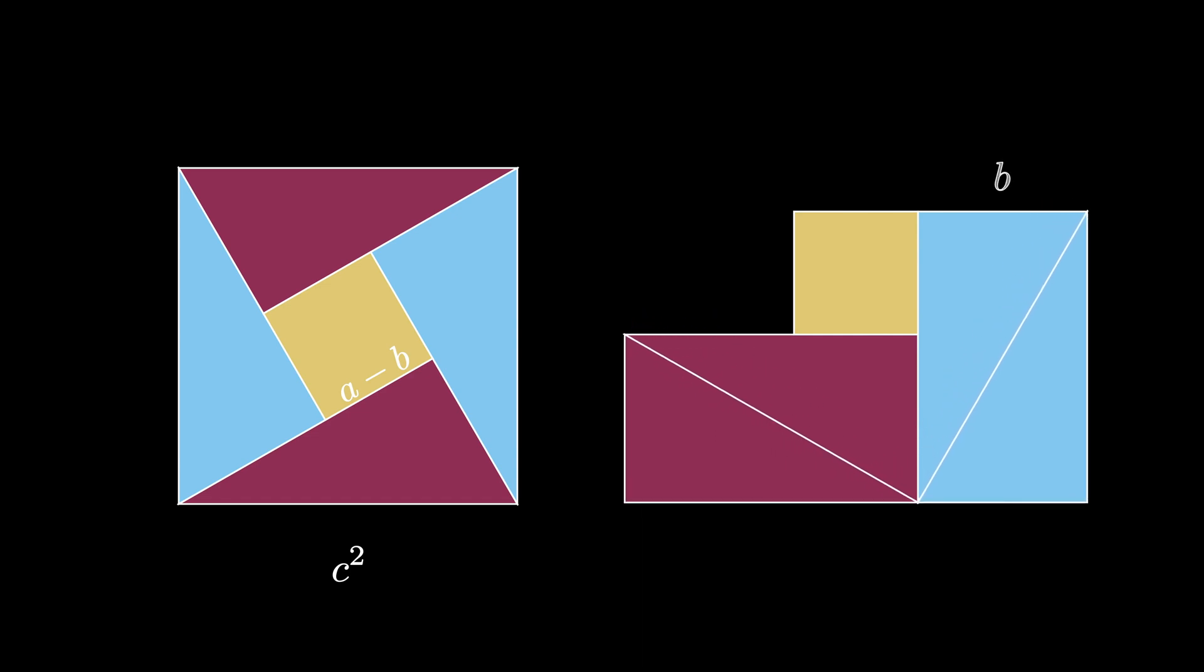Now this diagram has one square and two rectangles. The rectangles have dimensions A and B, and the square has a side length of A minus B.